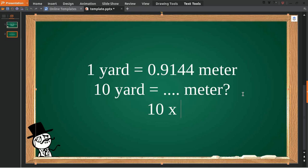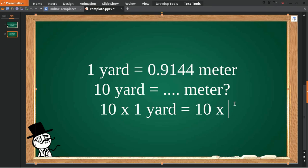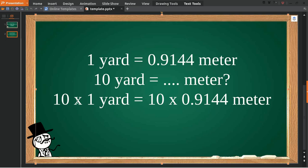Then give it an equal sign, and then you multiply again 10 from here with this number. Multiply, and 10 times 1 is equal to 10, and then 10 times this number.